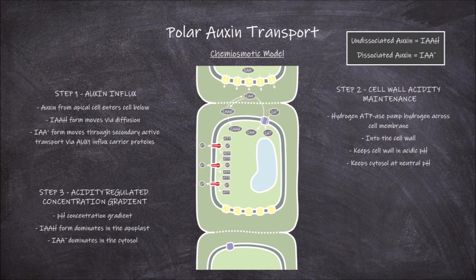The undissociated form moves through diffusion into the cell down its concentration gradient. Once in the cell, it converts to the dissociated form. The dissociated form that hasn't converted in the apoplast moves along with hydrogen molecules through a symporter protein down the hydrogen concentration gradient.